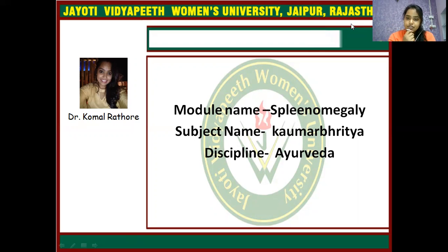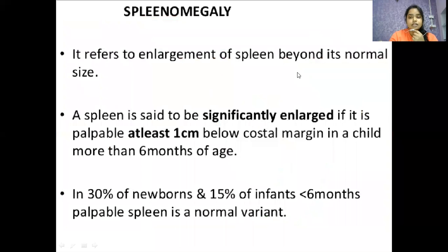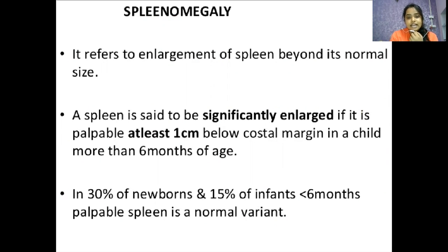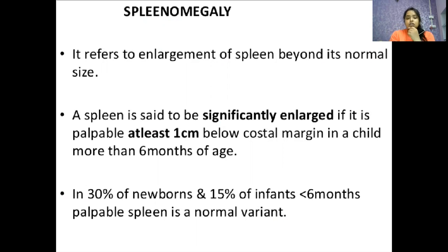Today's session we will discuss about Splenomegaly. So what is Splenomegaly? Splenomegaly refers to enlargement of spleen beyond its normal size. A spleen is said to be significantly large if it is palpable at least one centimeter below costal margin in a child more than six months of age.